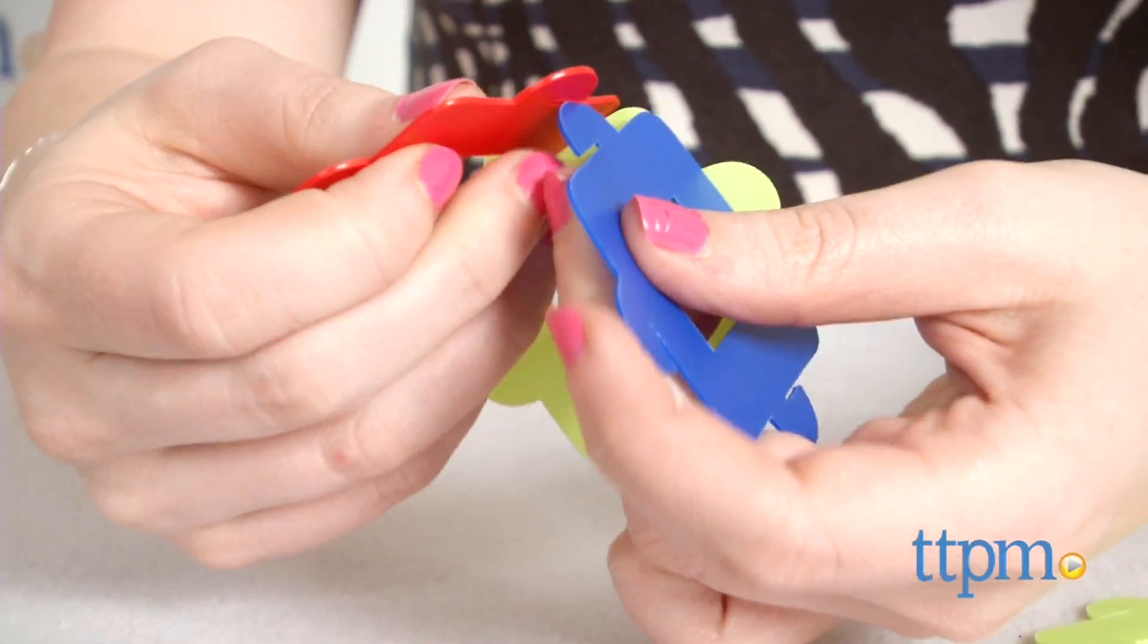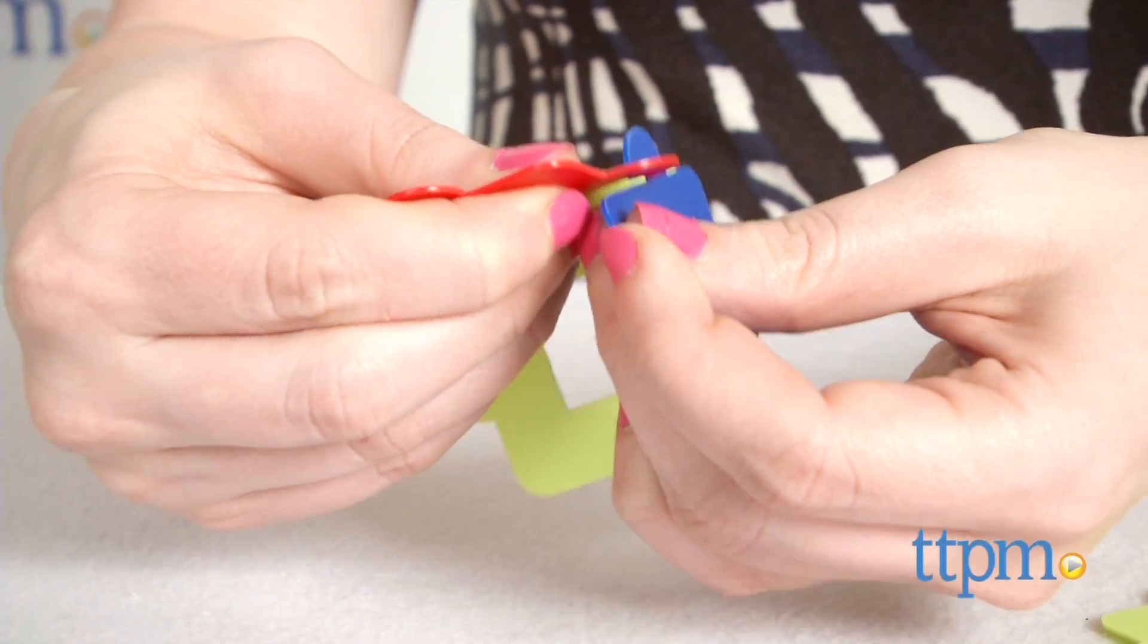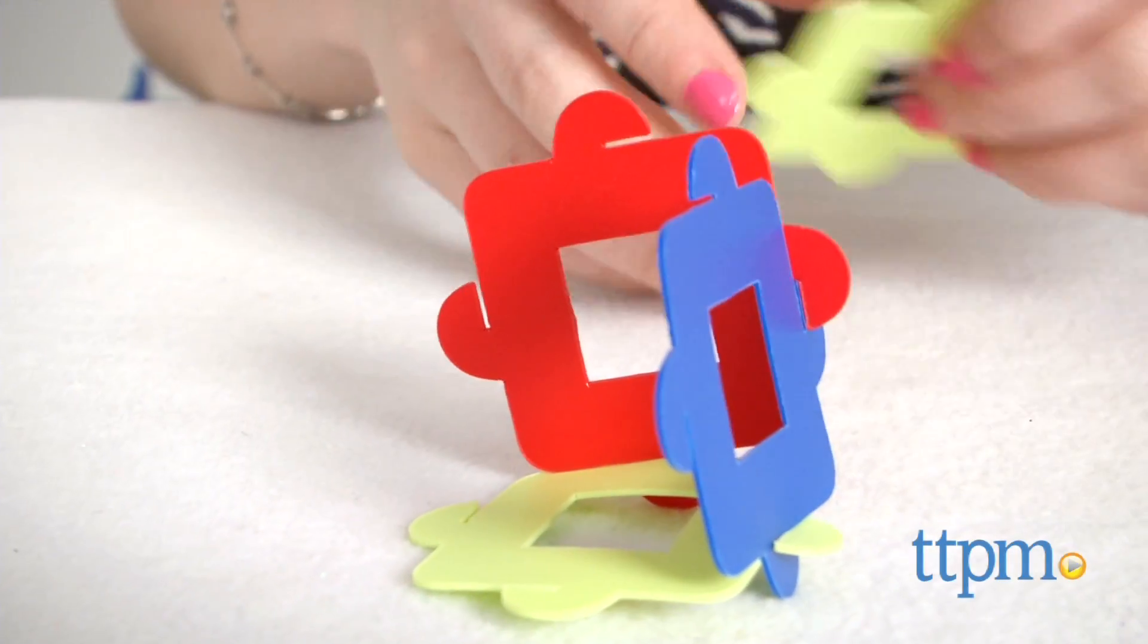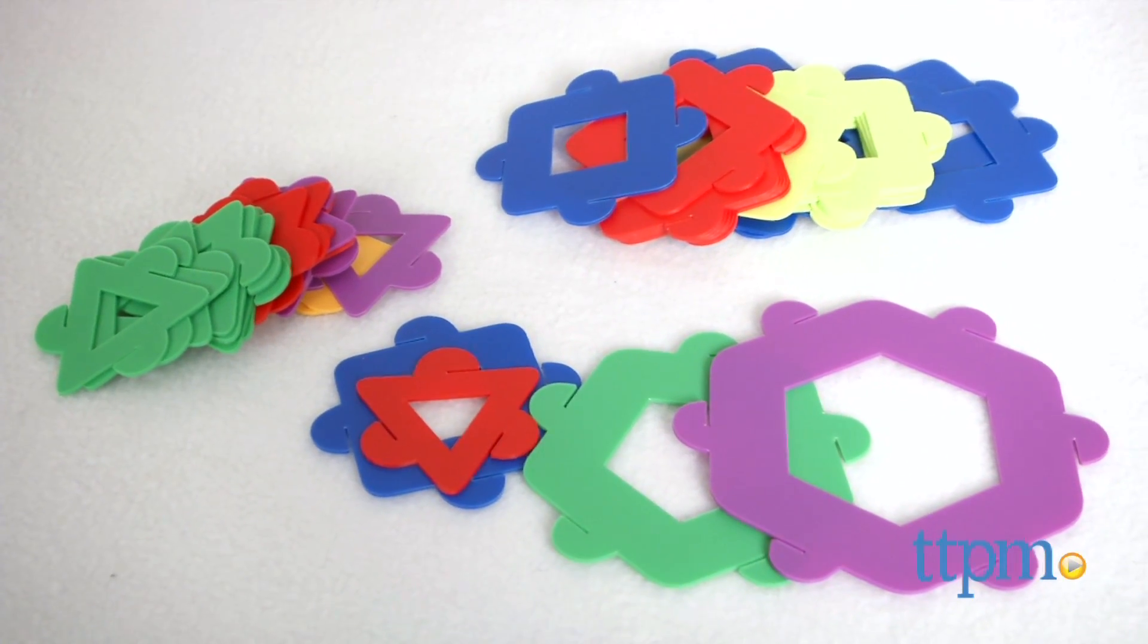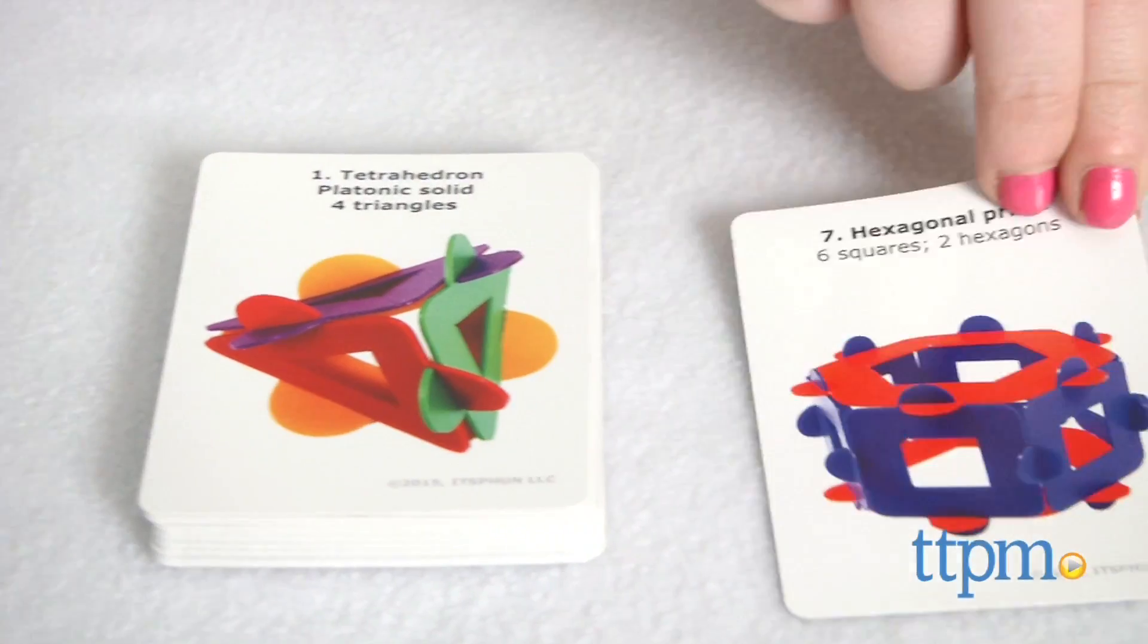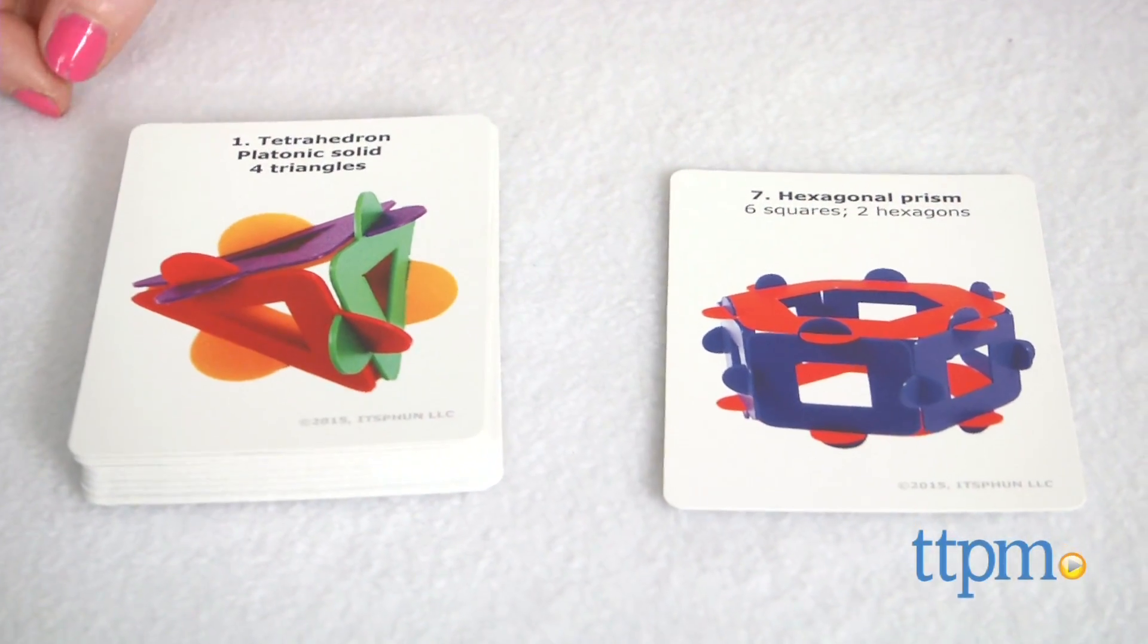The pieces feature notch connections on each side of the shape that can then be linked together to create three-dimensional designs. To help offer a bit of direction out of the box, the set also comes with a stack of cards that feature 54 illustrated structures you can create.